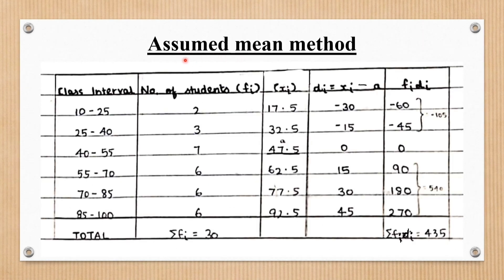The second method is the assumed mean method. The table has the same first three columns as the direct method: class interval, frequency fi, and xi. The fourth column is di, which equals xi minus a. The value a can be any value from the xi column; for convenience we choose the mid value 47.5 as a. We then find all di values and the next column fi times di for all class intervals.